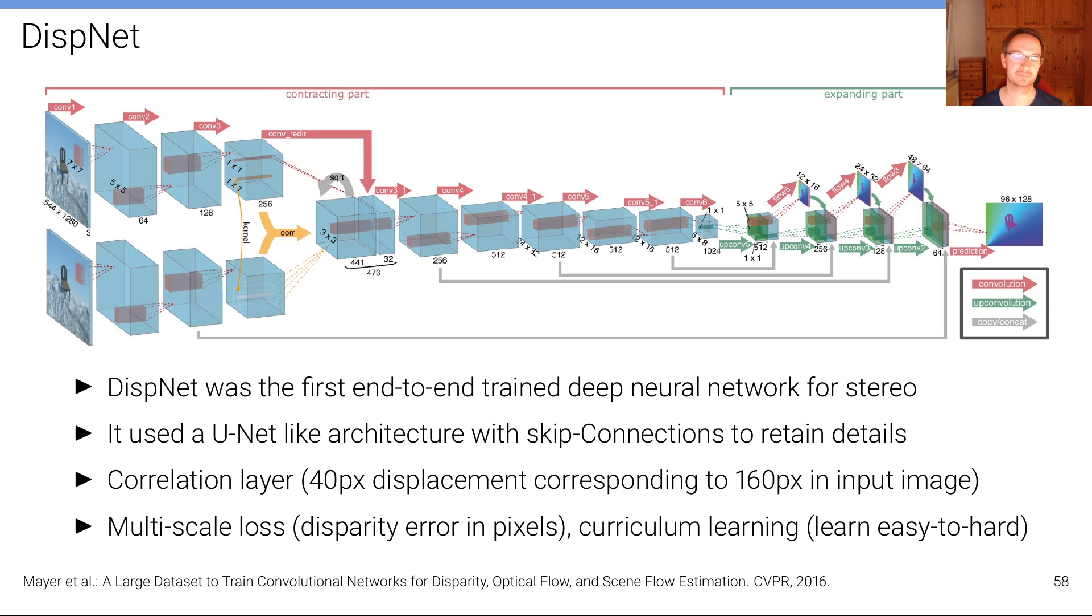was first trained on easy examples like very simple scenes that are easy to match and smaller resolutions. And then later, the difficulty of the datasets was increased until the target dataset difficulty had been reached. And that's a strategy that is still frequently used, in particular in the context of training deep neural networks for stereo estimation and optical flow estimation.